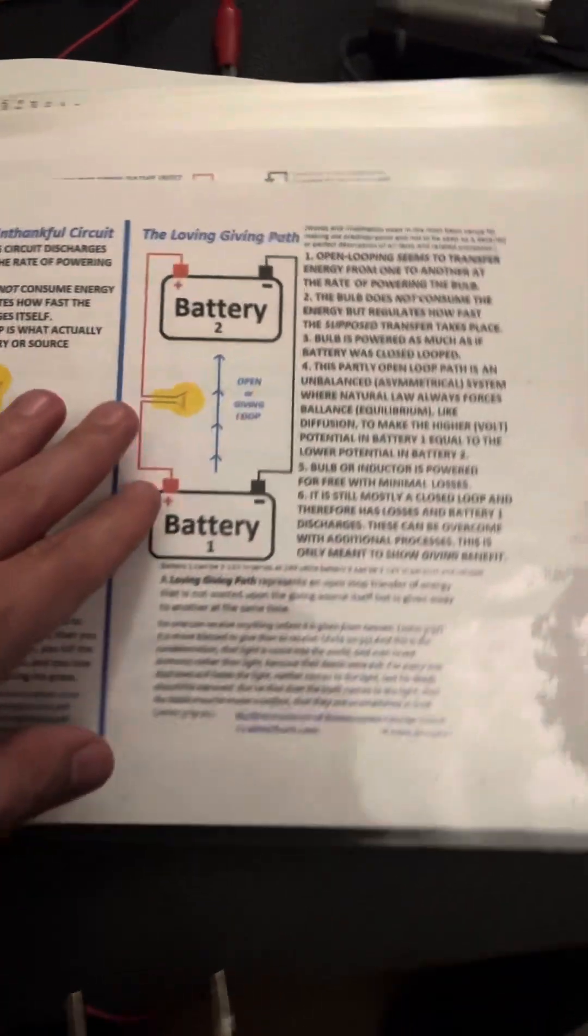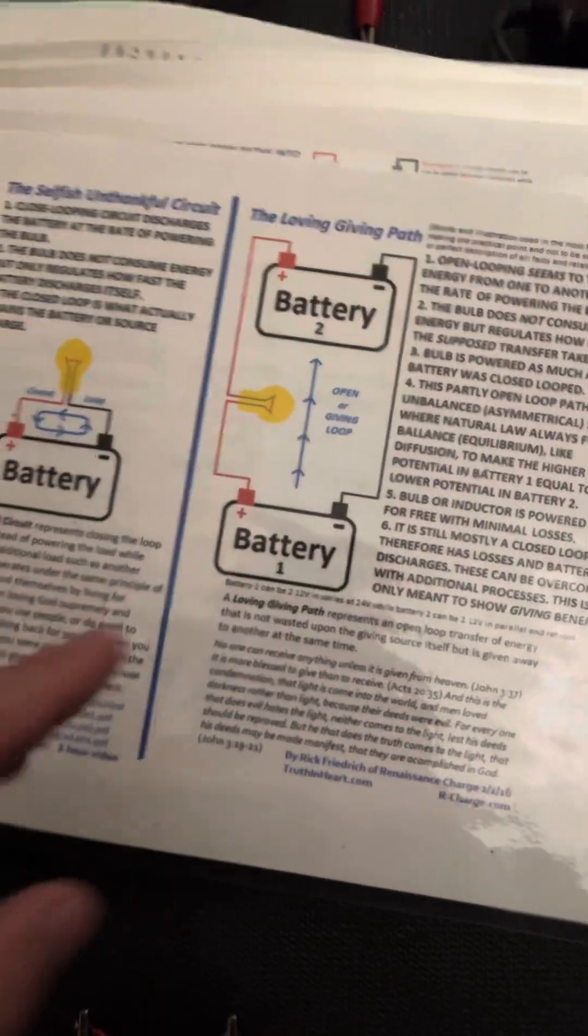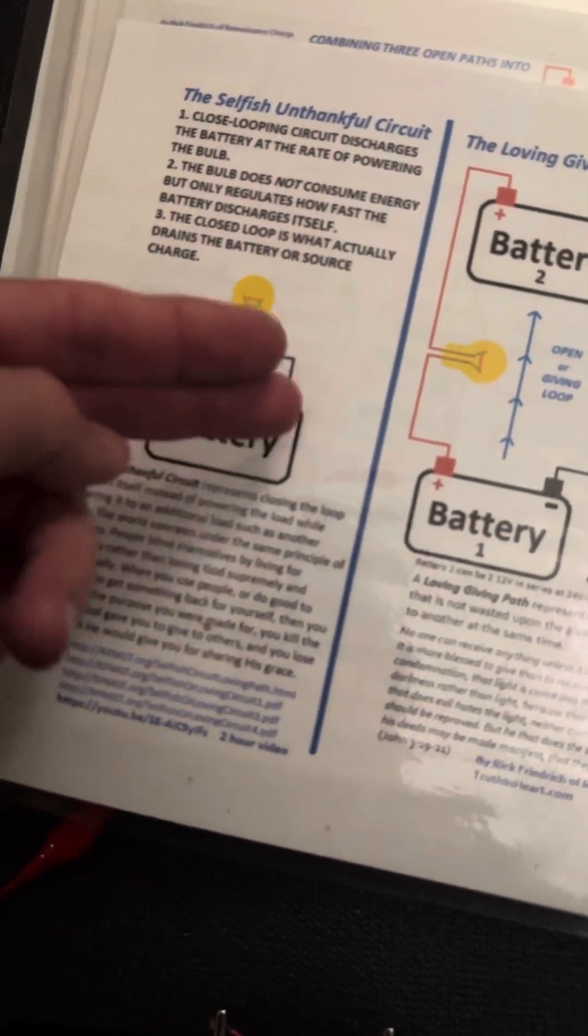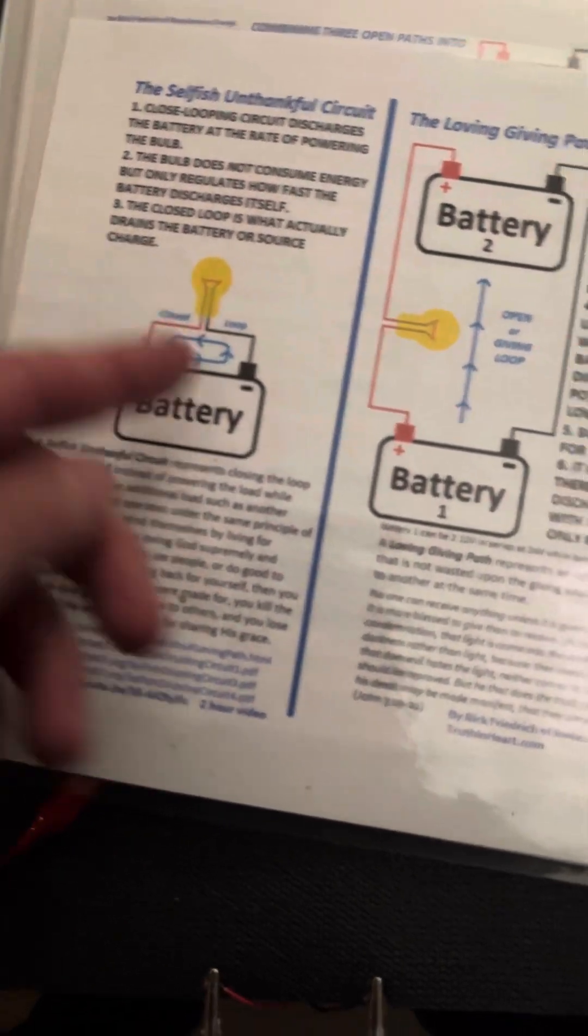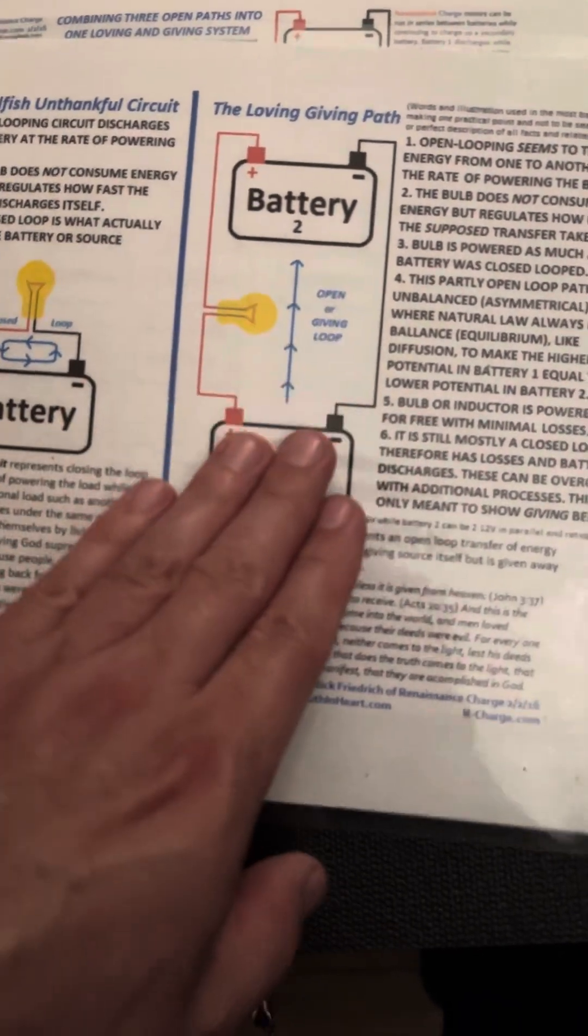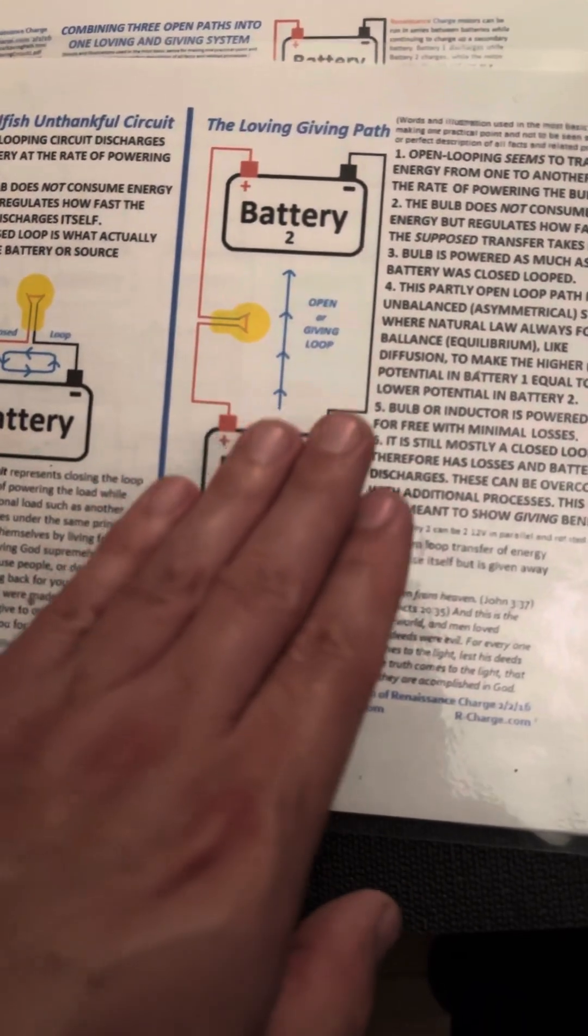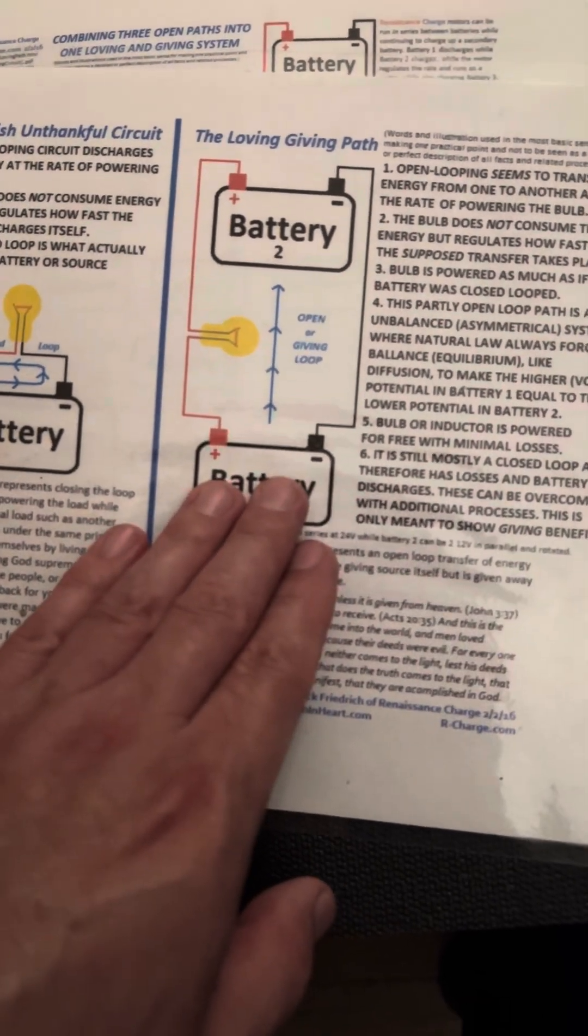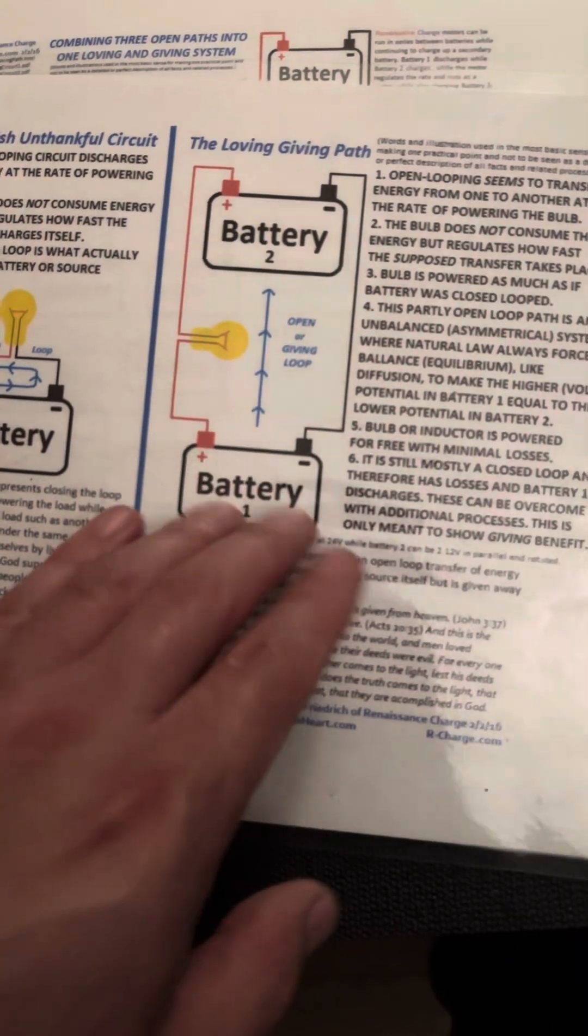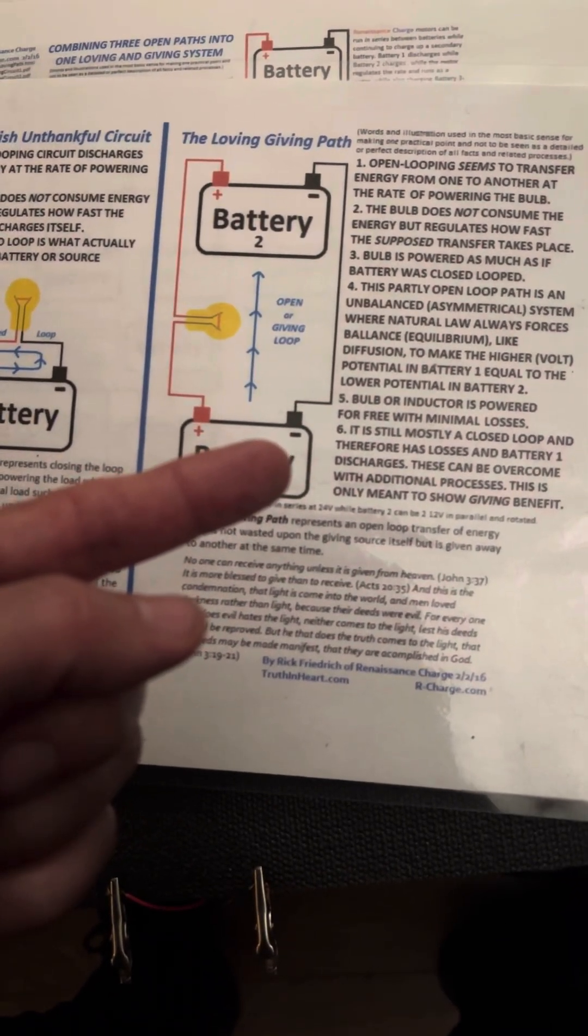So now what I did here with the bicycle. Instead of having just one battery on the bicycle and discharging it at the rate of powering the motor, I added another battery. Now, what I did with this battery is I connected the high voltage battery, which is 84 volts. And my bicycle battery is 54 volts. I connected this battery to a pulse width